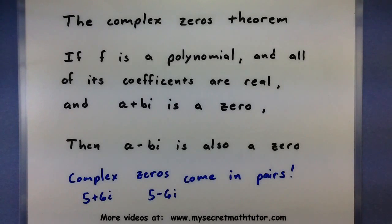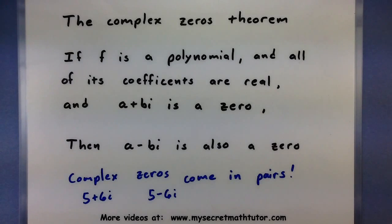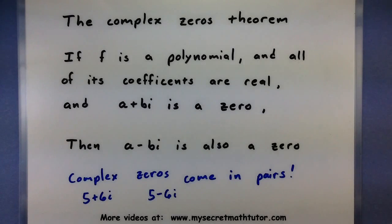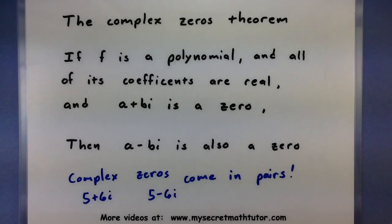You can sometimes see the complex zeros theorem at work in other theorems. For example, if you look at Descartes' Rule of Signs, it has a part that says the maximum number of zeros is the number of sign changes, or it could be less than that by an even number. That part — less than by an even number — is taking into account that there could be complex zeros, and since they always come in pairs, it goes down by 2 every time.